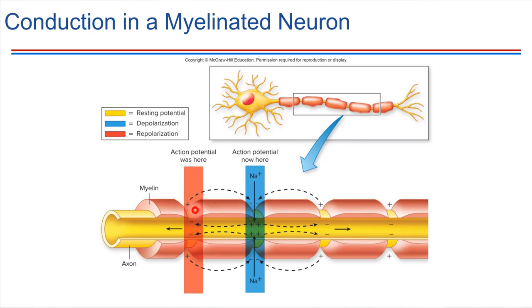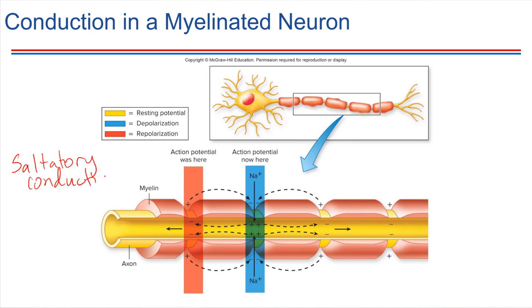Essentially the action potential jumps — it jumps from node to node to node. Signal propagation happens really quickly because it doesn't have to take time spreading the signal through each region; it can just jump from this location to this one to this one. That's called saltatory conduction. This is how myelinated neurons transmit signals, and it really helps to speed up electrical signal propagation.